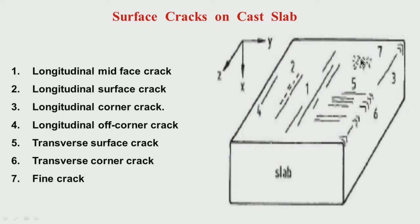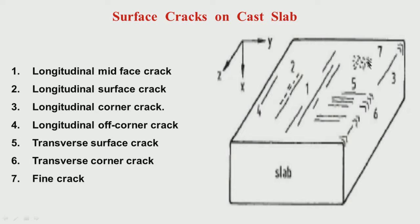Now look at these other types of cracks. As I mentioned for billet, bloom, and rounds, you can also have some fine cracks not having any particular orientation — neither longitudinal nor transverse. We call them fine cracks. Sometimes you may also call them spider cracks if they are small and oriented in different directions. In slabs as well, like billet, bloom, and rounds, you can have lots of surface cracks.